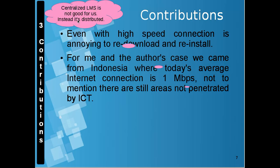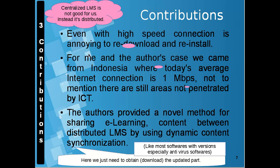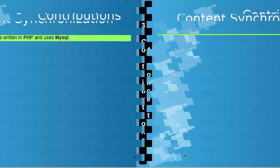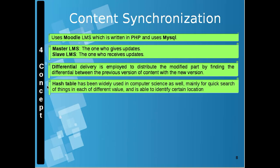Instead of a centralized LMS, we must use a distributed LMS. We propose a dynamic content synchronization method on a distributed LMS. When content is updated, we don't need to re-download and reinstall everything — we just click the update button and download the updated part only, similar to how antivirus software updates work. The master LMS is the one that provides updates, the slave is the one that receives them. We want differential delivery — only the updated parts. The hash table is very important for identifying specific content locations.